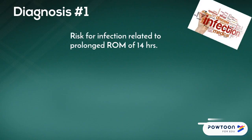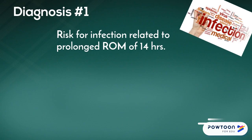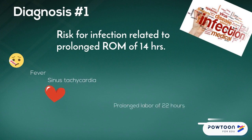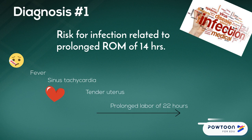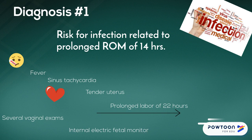Our nursing diagnosis for AJ is risk for infection related to prolonged rupture of membranes of 14 hours. She had a fever, was tachycardic, had a high white blood cell count, prolonged labor of 22 hours, tender uterus, vaginal exams, signs and symptoms of fetal distress, and internal monitors.